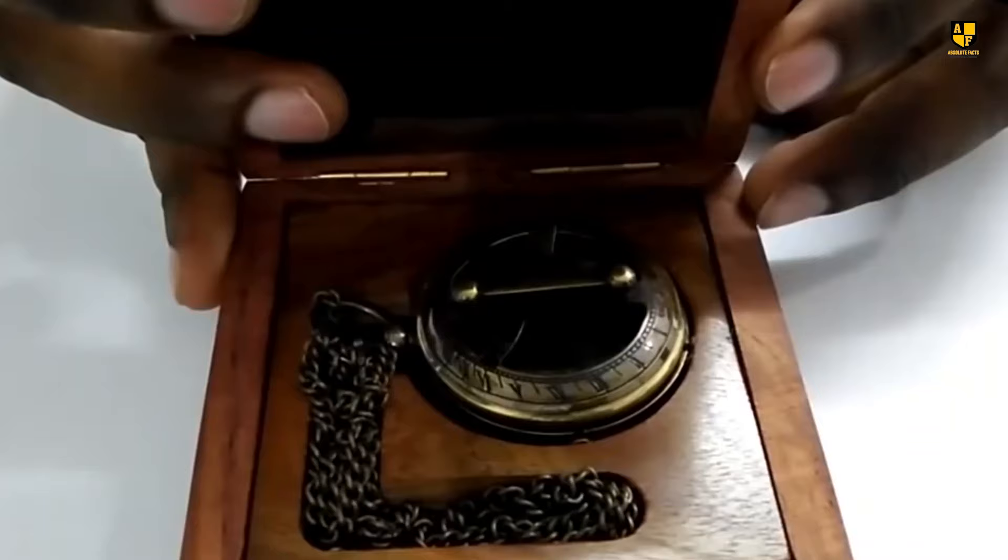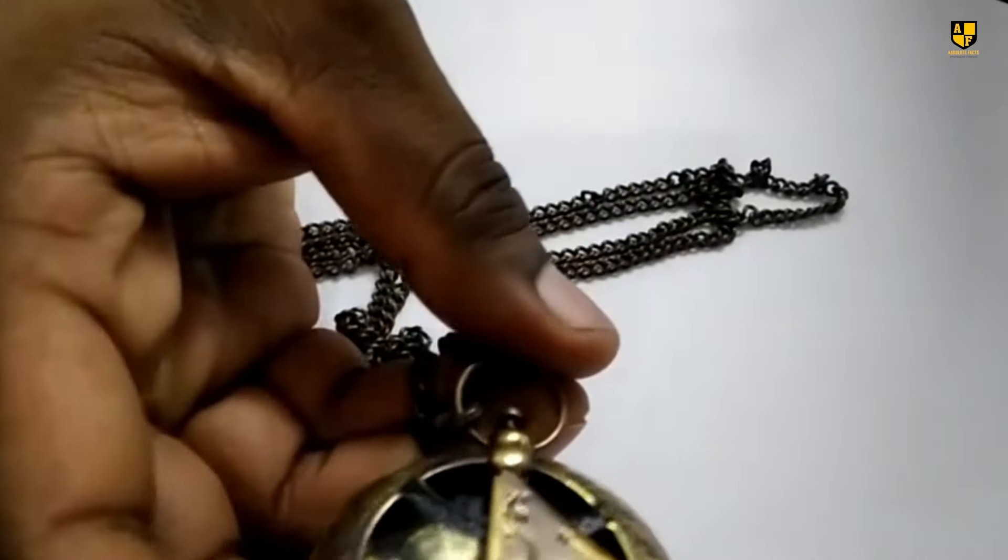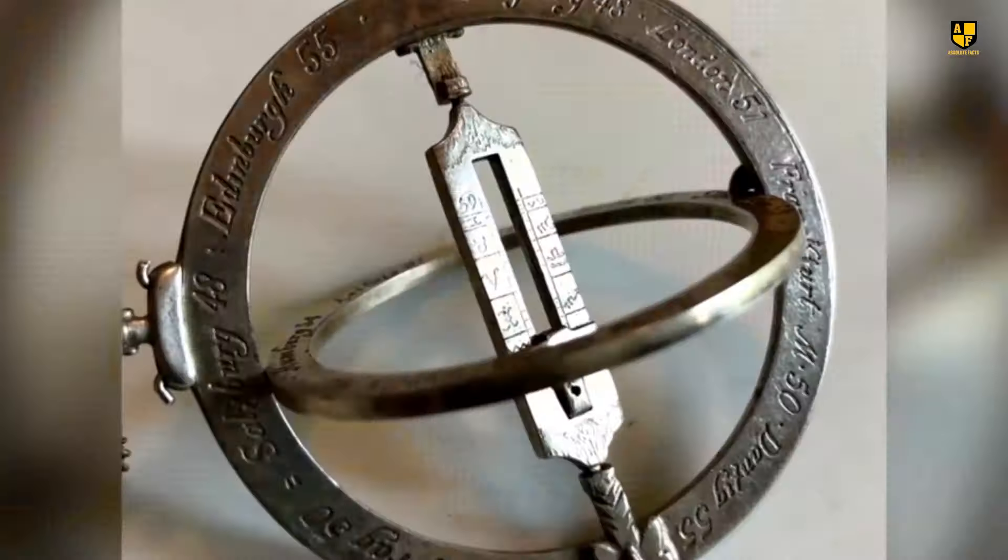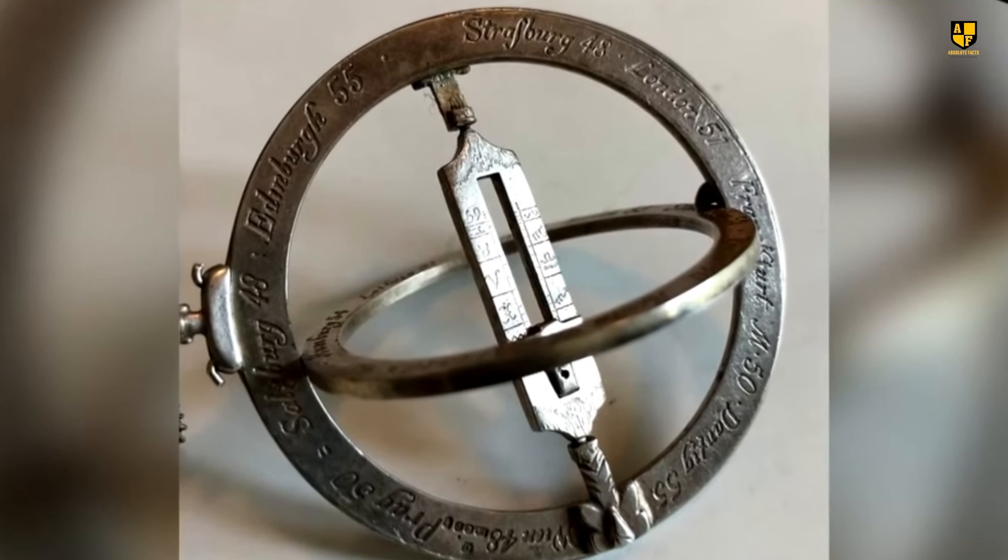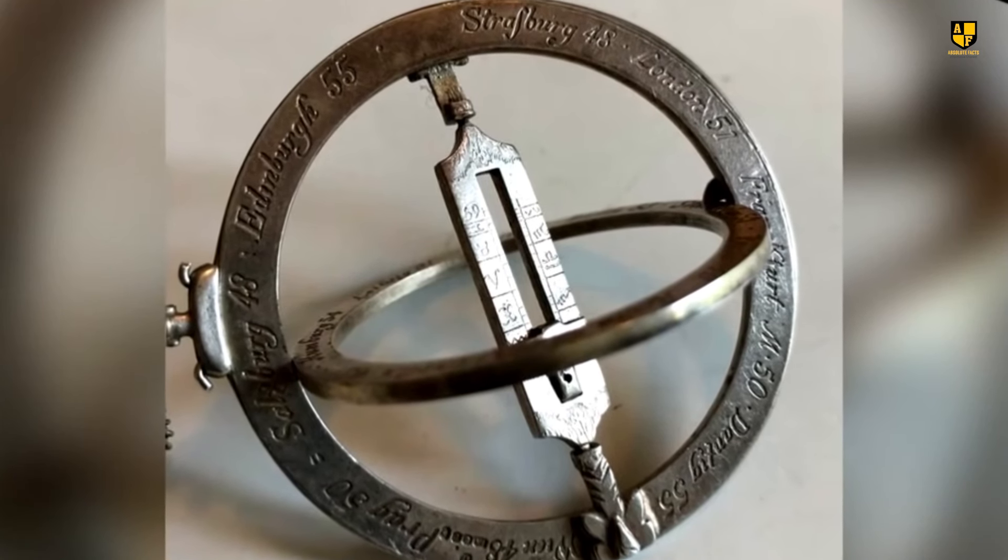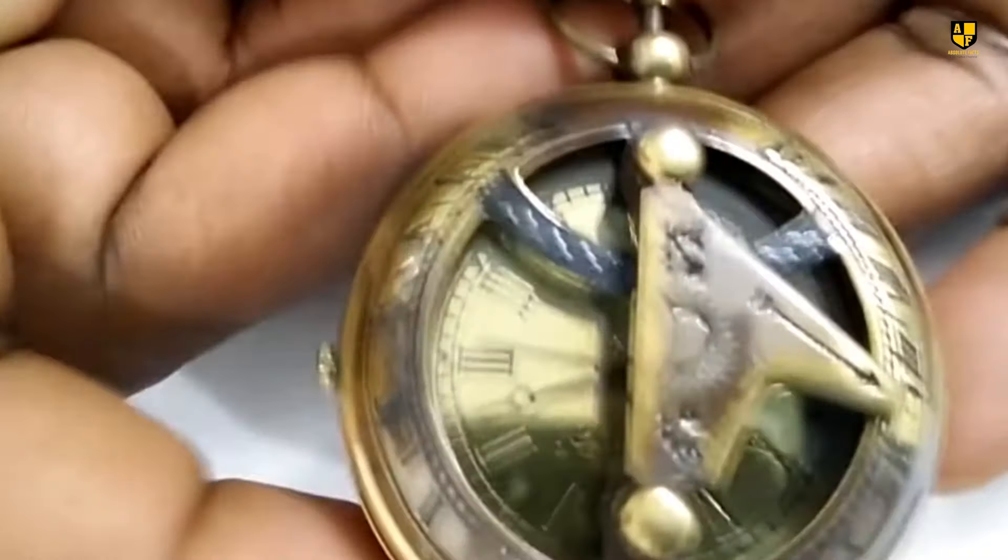Number 9. Pocket Sundial. Before the modern wristwatch, telling time was an art, and the Pocket Sundial was its masterpiece. Ingeniously designed, this compact marvel relied on the sun's position to cast shadows that revealed the hour with remarkable precision. Crafted with two circular plates and a hollow gnomon in the center, the Pocket Sundial was not only practical, but also a testament to human ingenuity.